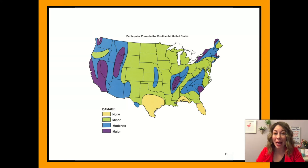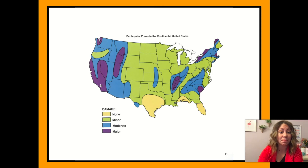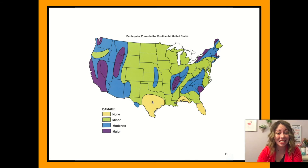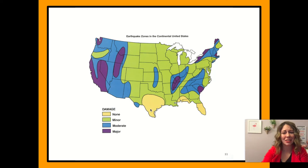We have a map of the United States. Here where I live in Kansas, we're in the green, which says 'minor.' There are earthquake zones in the continental U.S., and we just have minor damage here in Northeast Kansas. If you live in California, you might have experienced major or moderate damage. On the East Coast, like the Carolinas, you might also have experienced major or moderate damage. But in Texas, you're not really seeing any damage. Through the central United States it's mostly green, so not too many earthquakes there.